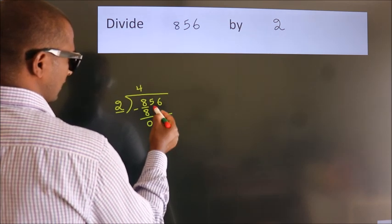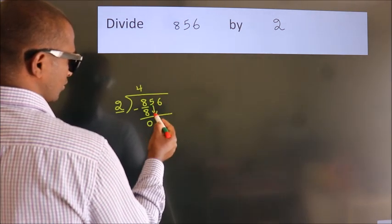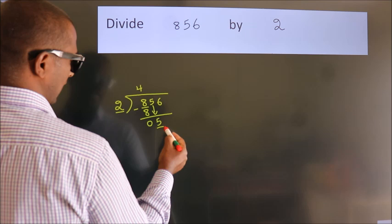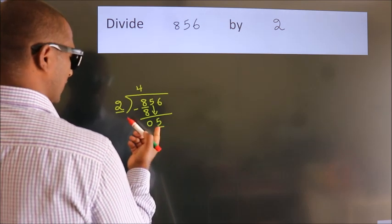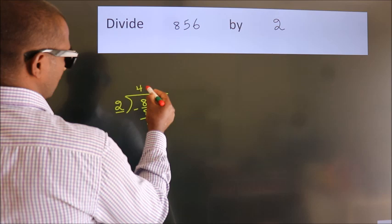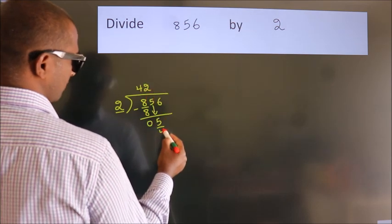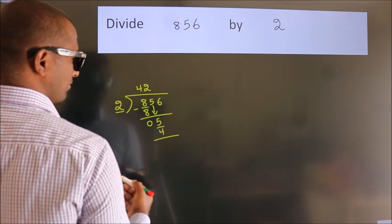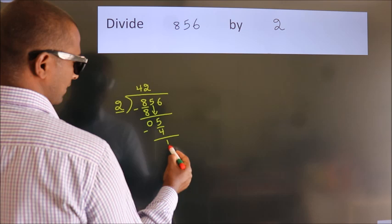After this, bring down the beside number, so 5 down. A number close to 5 in 2 table is 2 twos, 4. Now, we subtract, we get 1.